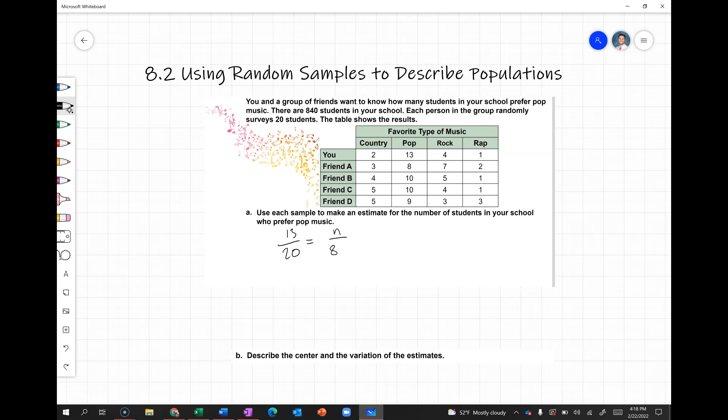13/20 will be equal to how many over 840. We know that we can multiply 20 by 42 to get 840, so that means 13 times 42 will give us the correct answer for your survey.